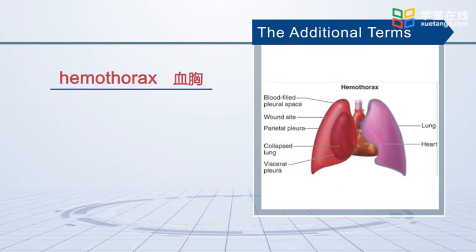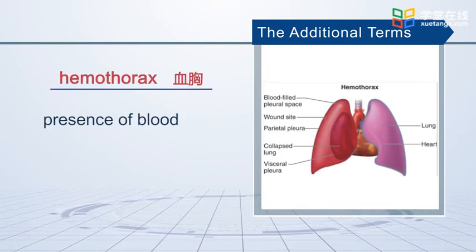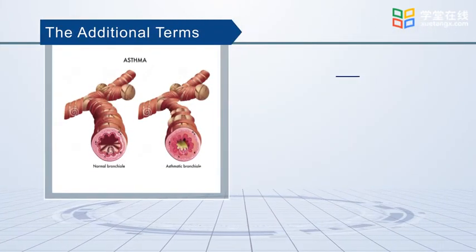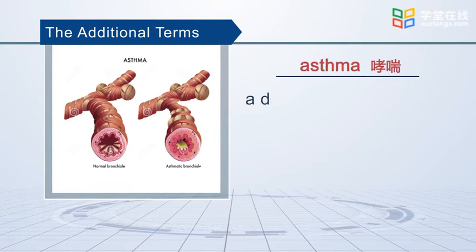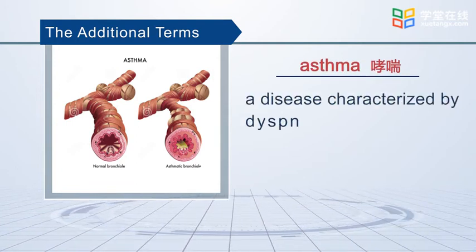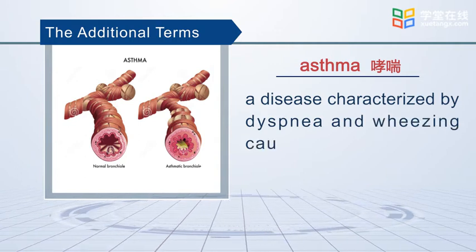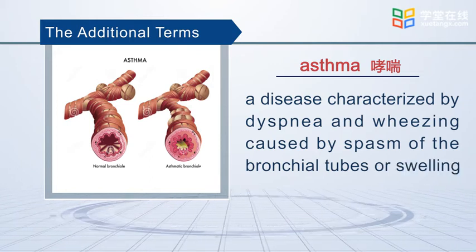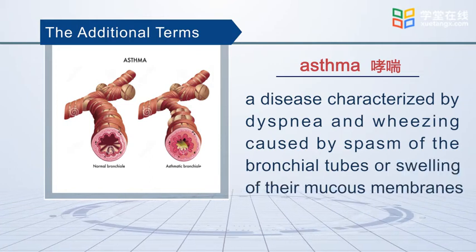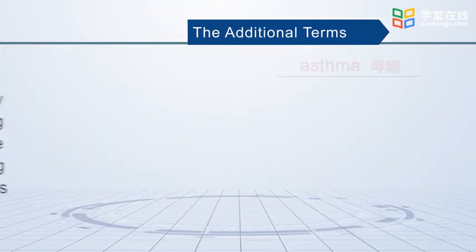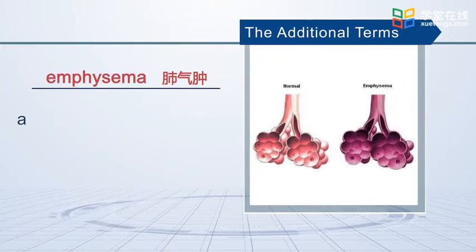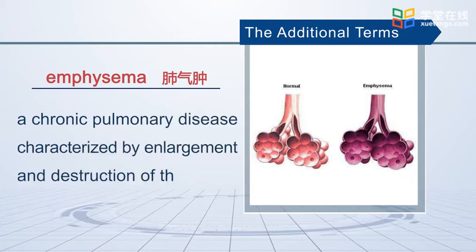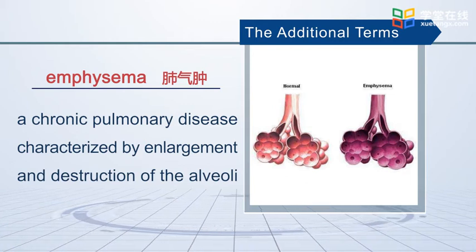Hemothorax is the presence of blood in the pleural space. Asthma is a disease characterized by dyspnea and wheezing caused by spasm of bronchioles or swelling of their mucous membranes. Emphysema is a chronic pulmonary disease characterized by enlargement and destruction of the alveoli.